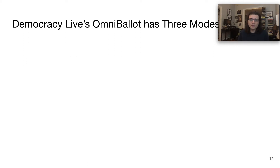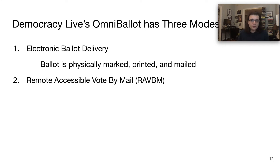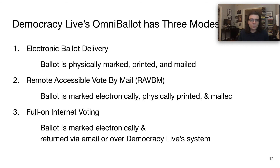A further complication is that Democracy Live's OmniBallot has multiple modes that have different threat models. For example, there's one that simply delivers the ballot, in which case the ballot is physically marked, printed, and mailed back. Then they have a remote accessible vote-by-mail system, which is sort of like a ballot marking device, but you're using your computer and printing it out at home instead of going to a polling place — the ballot is marked electronically but then physically printed and mailed. Finally, they have full-on internet voting, where the ballot is marked electronically and sent back through Democracy Live servers.